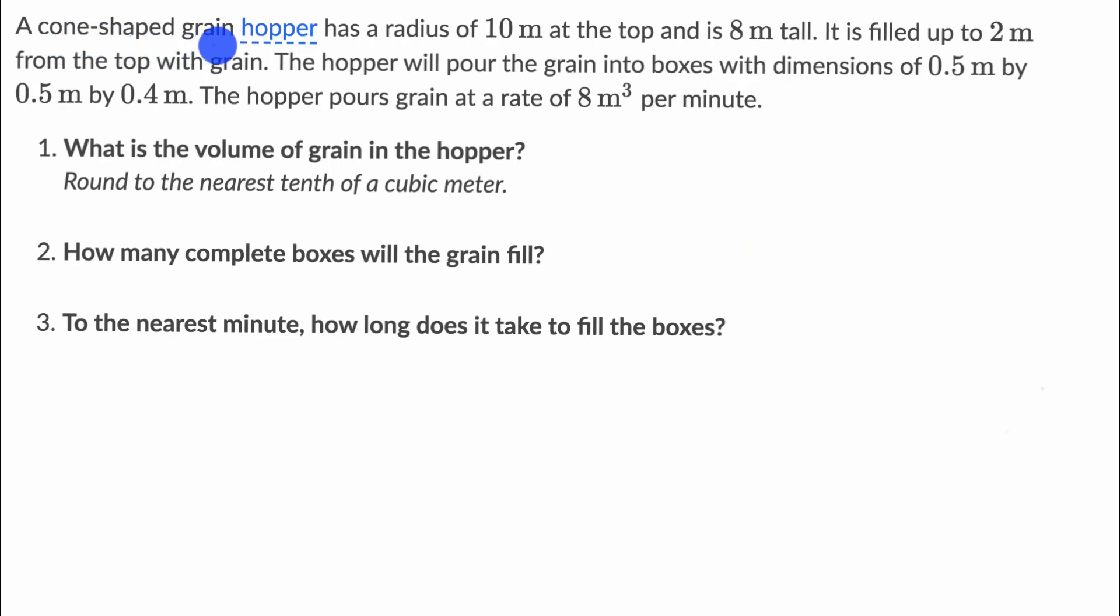We're told that a cone-shaped grain hopper—they put the highlight hopper in blue here in case you want to know its definition on the exercise. It's something that would store grain and then it can kind of fall out of the bottom—has a radius of 10 meters at the top and is eight meters tall.